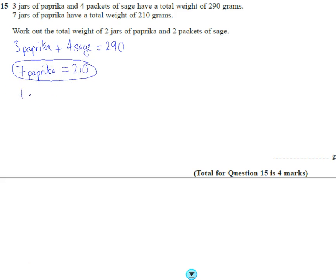So to work out one packet of paprika, I'm going to do 210, I'm going to divide it by 7 as there's 7 packets. So that comes out as 30 grams. 21 divided by 7 is 3, and then it's 30 grams.